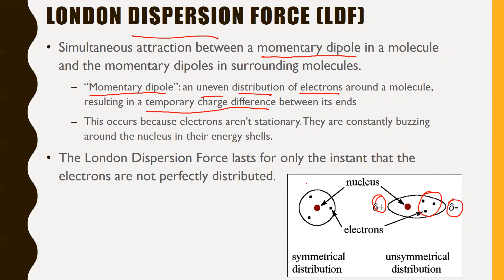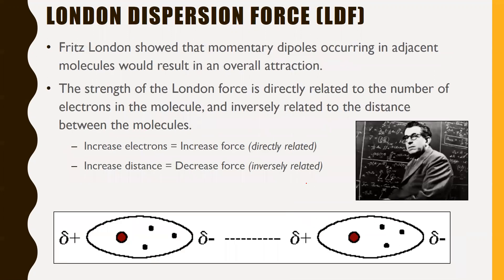The London dispersion force only lasts for the instant that electrons are not perfectly distributed, so it isn't long-standing like the dipole-dipole force. It was discovered by Fritz London, who showed that momentary dipoles occurring in adjacent molecules result in an overall attraction. Even though this is only happening for a split second, it still has a notable effect on overall attraction.